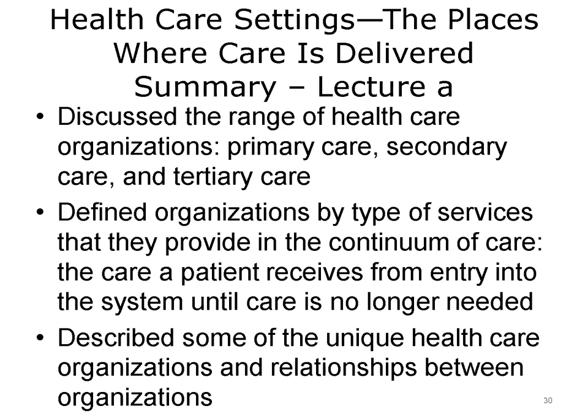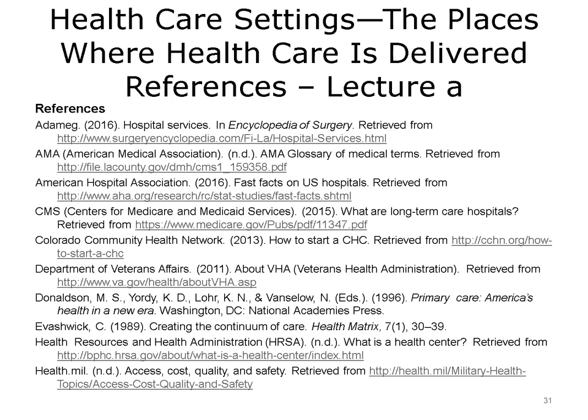This concludes Lecture A of Health Care Settings: the Places Where Care is Delivered. This lecture discussed the range of health care organizations, including those that provide primary care, secondary care, and tertiary care. The lecture defined the types of services provided in the continuum of care — the care a patient receives from entry into the system until care is no longer needed — and described some of the unique health care organizations and the relationships between them. Thank you.